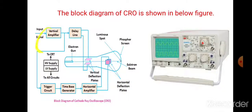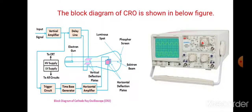The first component is the vertical amplifier — how it will be functioning. The vertical amplifier amplifies the input signal which is to be displayed on the screen of the cathode ray tube. This is working as an input signal amplifier.